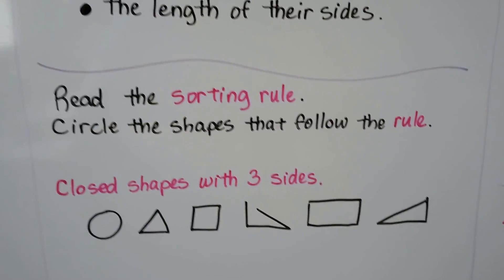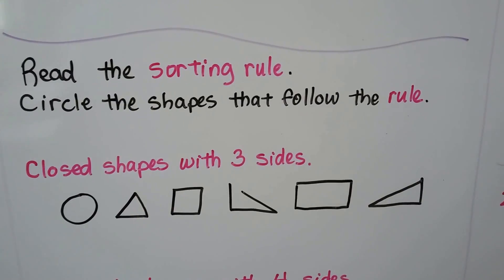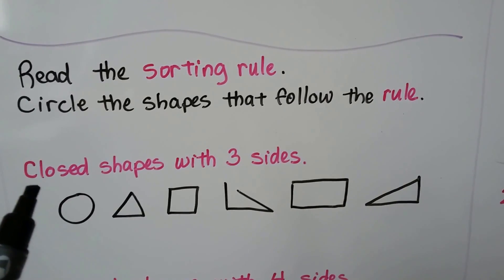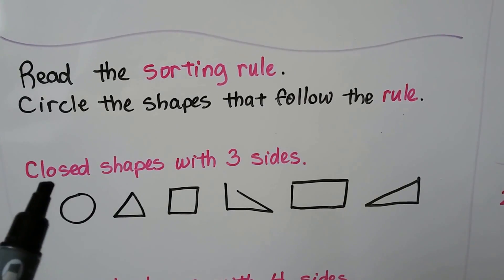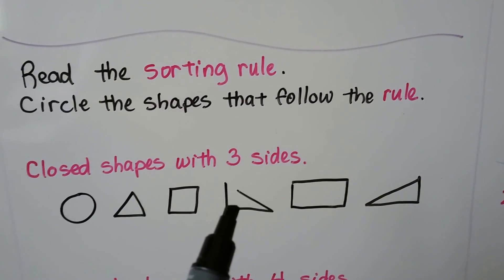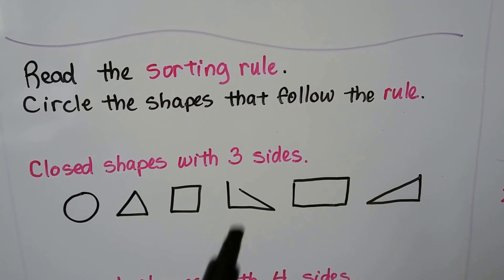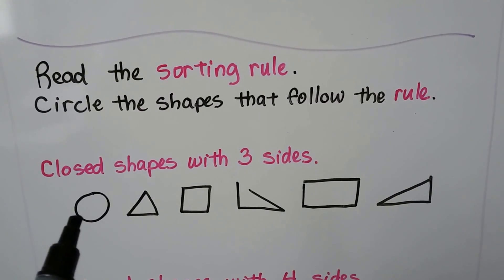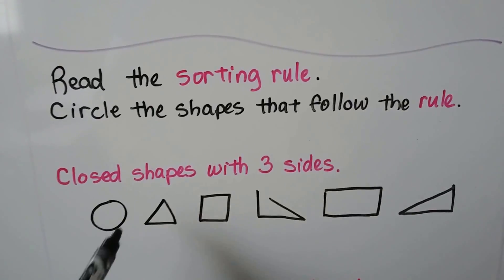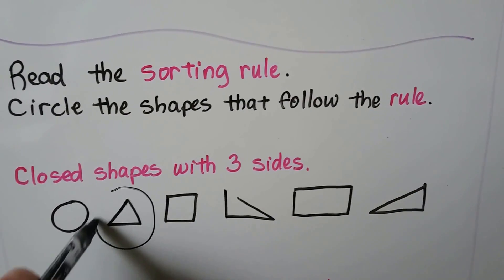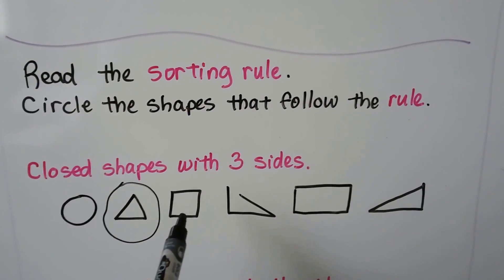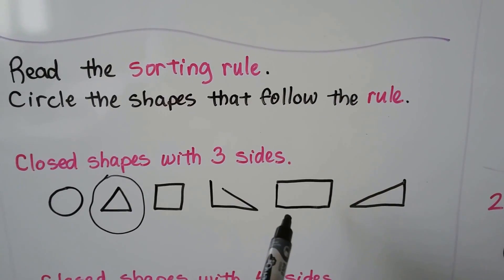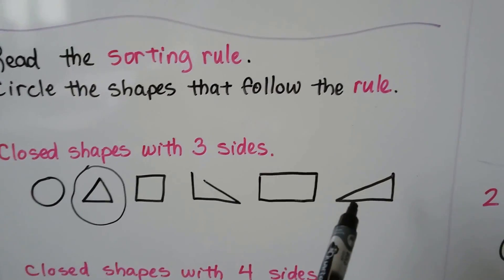Read the sorting rule and circle the shapes that follow the rule: closed shapes with three sides. That one's open, so we're not going to count it. Circles just have curves. A triangle has three sides and it's closed — we can circle that. Squares have four sides, so not that one. That one has three sides and it's closed.